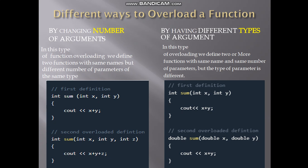The second way is by having different types of arguments. In this type of overloading, we define two or more functions with the same name and the same number of parameters, but the type of parameter is different. Here you can see the first definition in which the function name is 'sum', taking two arguments x and y of type int and performing their addition. The second overloaded function also takes two arguments x and y, but the type is double. This is the concept of overloading by changing the types of arguments.